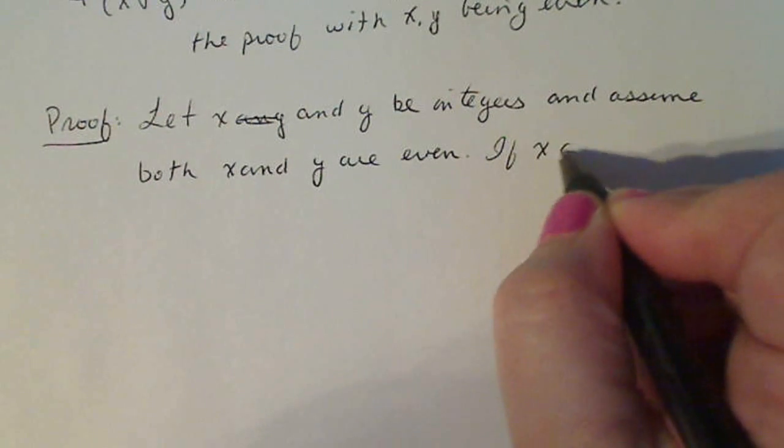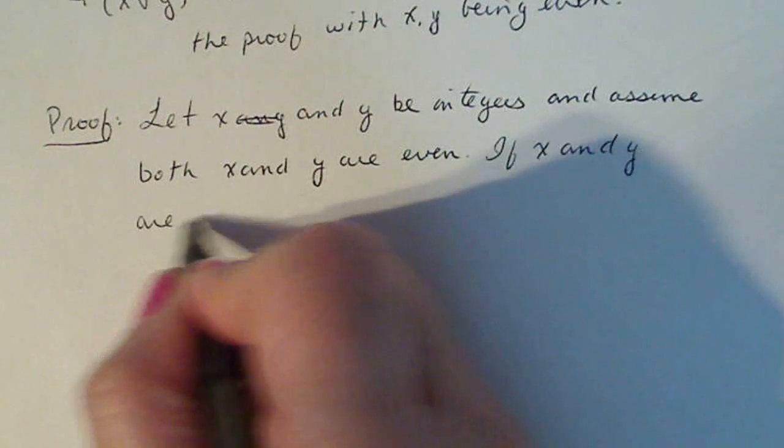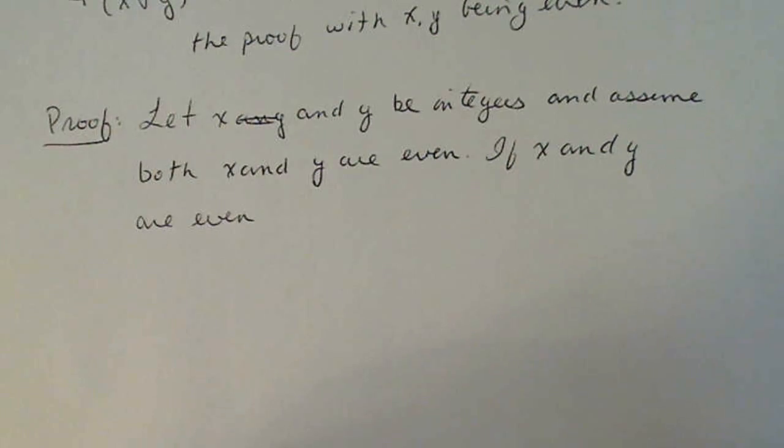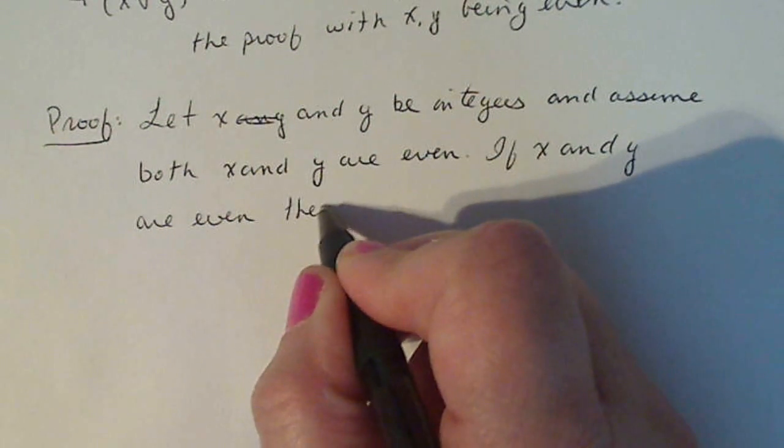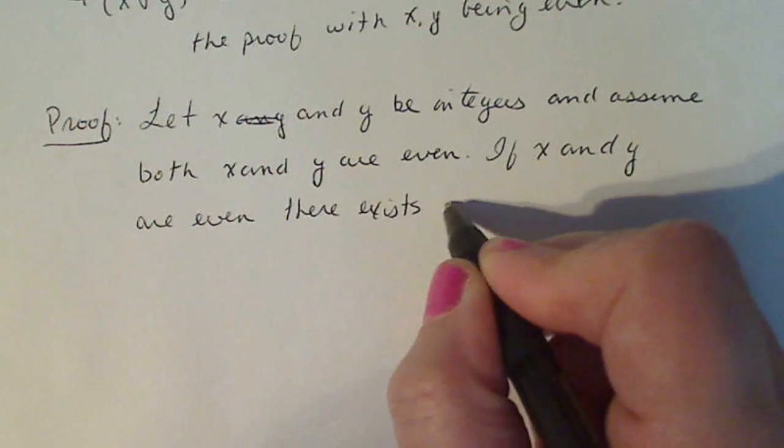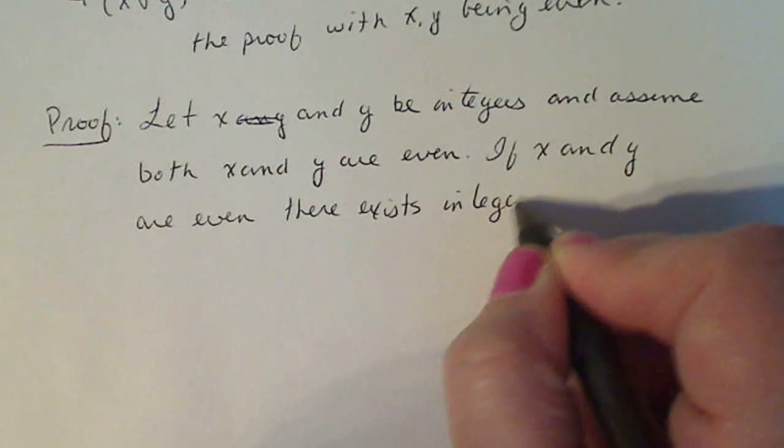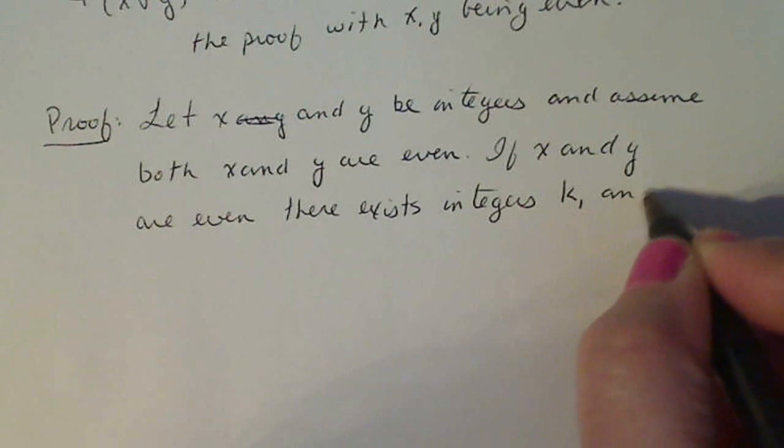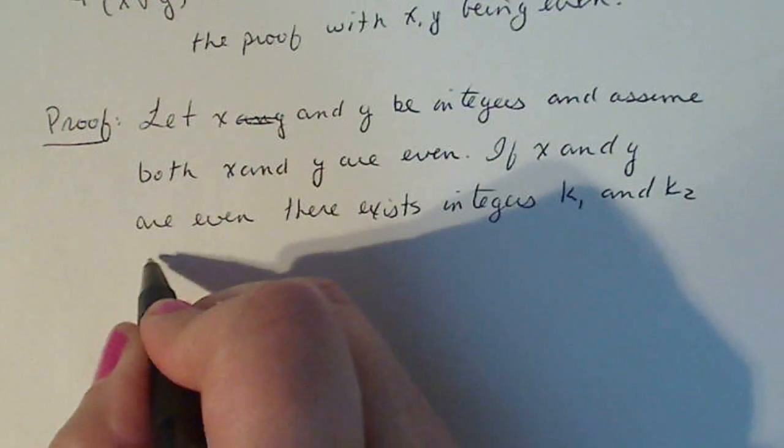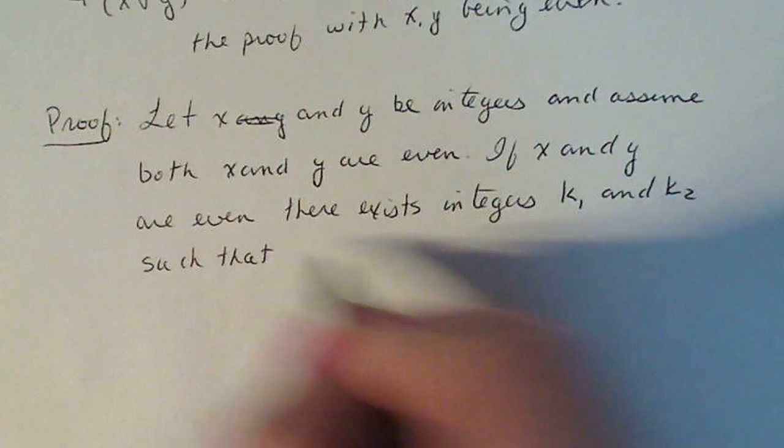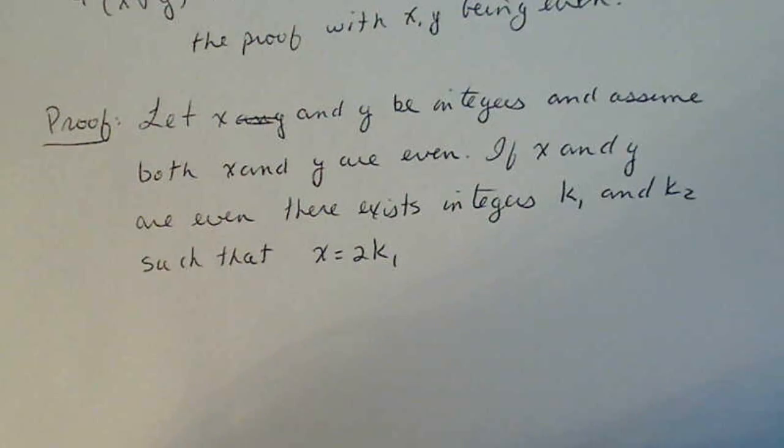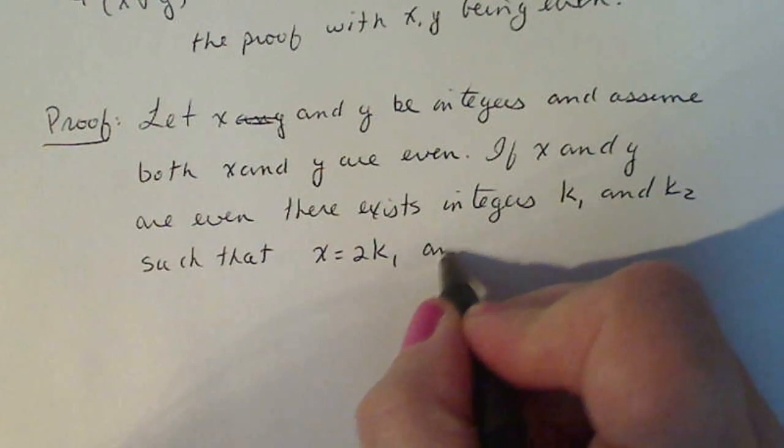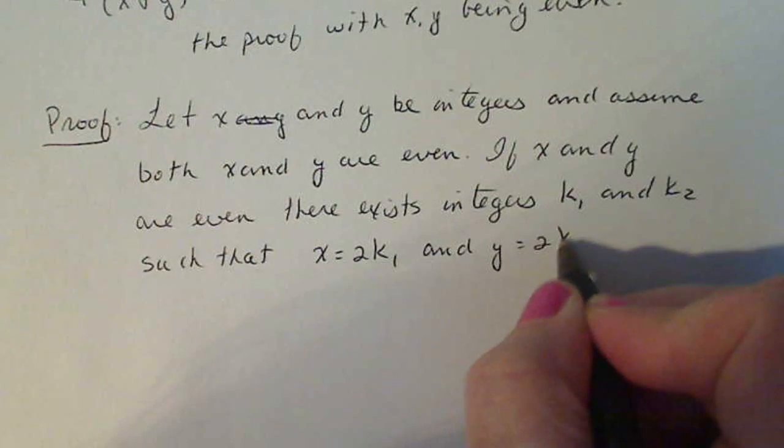If x and y are even. If x and y are even. I'm going to write down what does that mean by definition if x and y are even? That means there exists integers k1 and k2, such that x equals two times an integer and y equals two times the other integer.